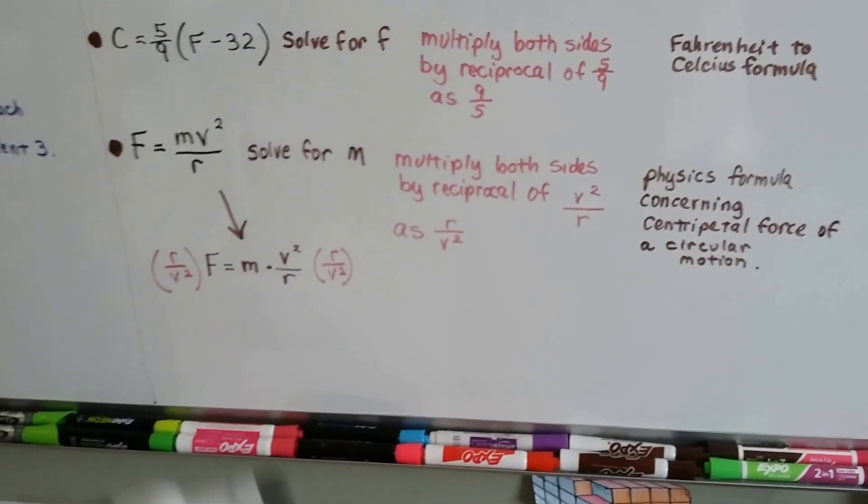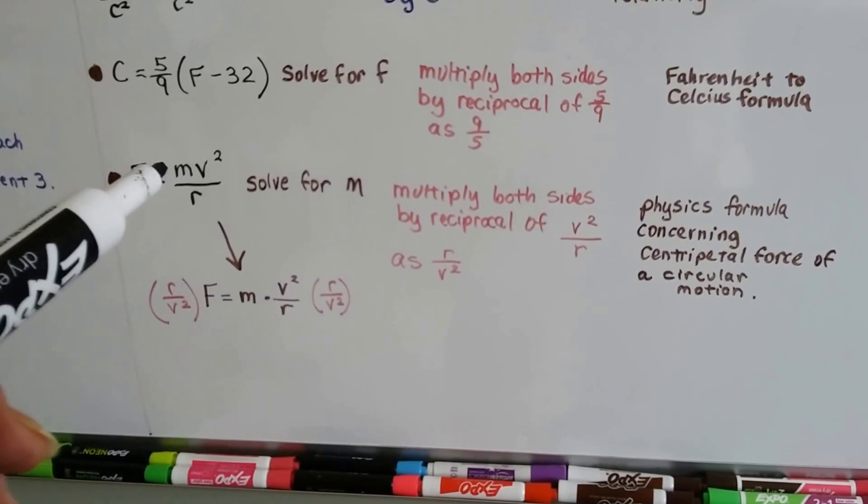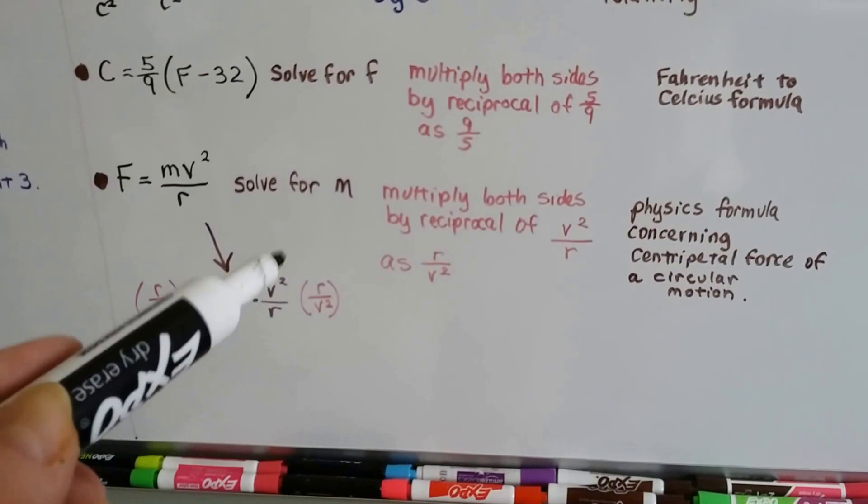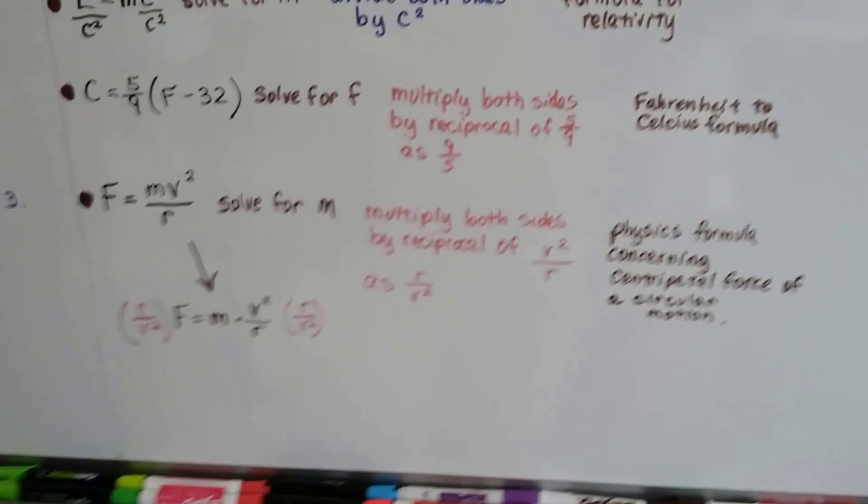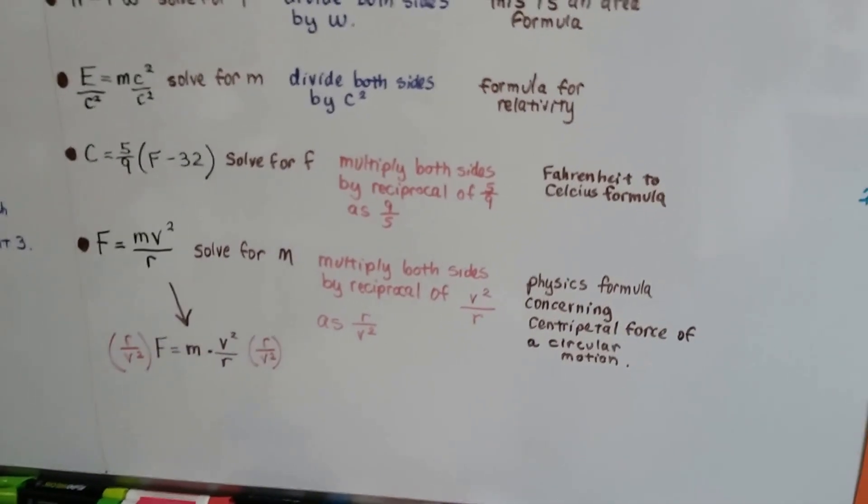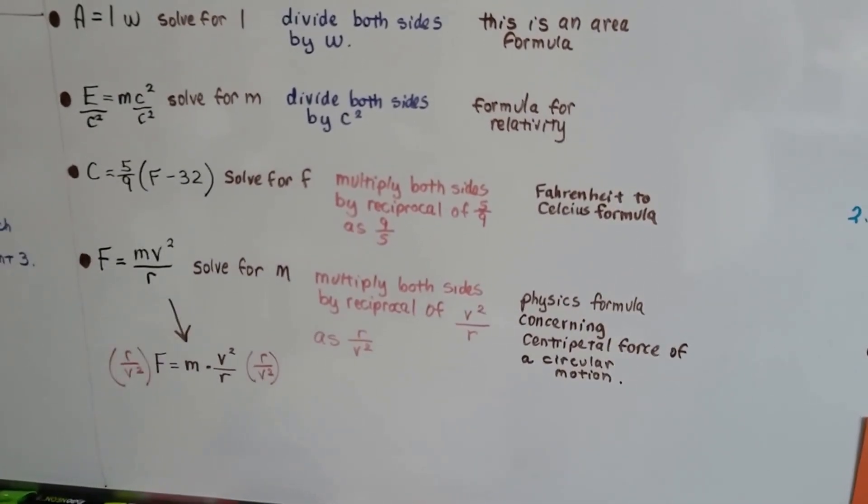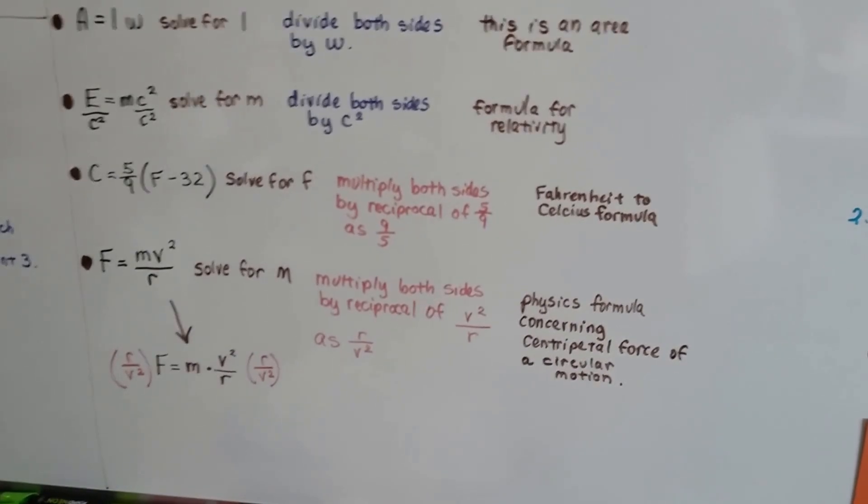It's a physics formula concerning centripetal force for circular motion. So, if you're planning on taking physics or anything, you're going to come across stuff like that. Just remember, you can split it apart. It's M times V squared over R. Easy, isn't it? Just don't think it's so hard and think, oh, there's got to be an easy explanation for this. Sometimes people make things harder than they really are.